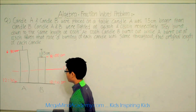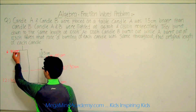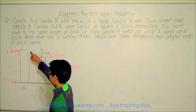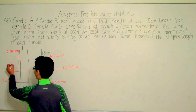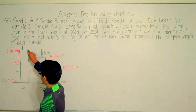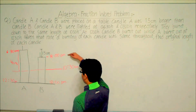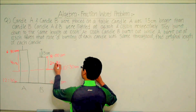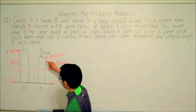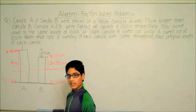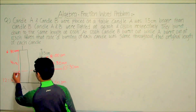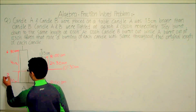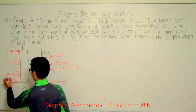From 6:30 a.m. to 10:30 a.m., Candle A burnt down from its original length to that common length — it took Candle A four hours to burn this portion. It took Candle B from 8:00 a.m. to 10:30 a.m., which is 2 hours 30 minutes, to burn down from its original length to the same common length. Then it took Candle A from 10:30 a.m. to 12:30 p.m. to completely burn up — this is 2 hours.